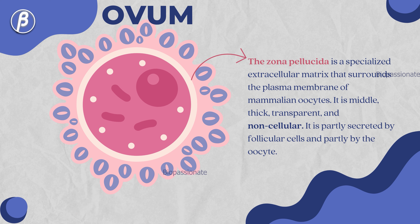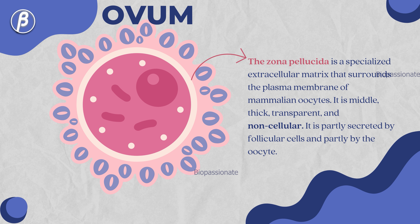The zona pellucida is a specialized extracellular matrix that surrounds the plasma membrane of mammalian oocytes. It is middle, thick, transparent, and non-cellular.